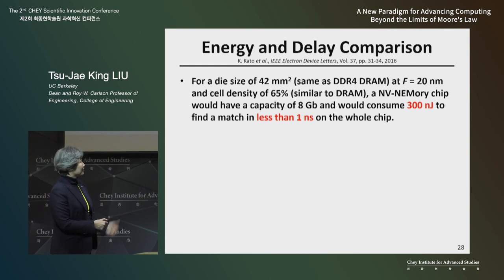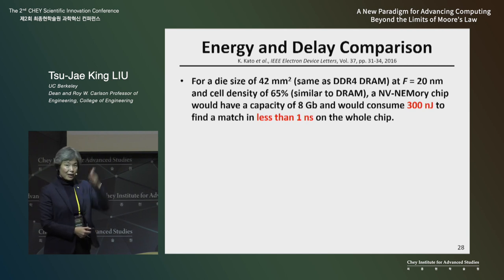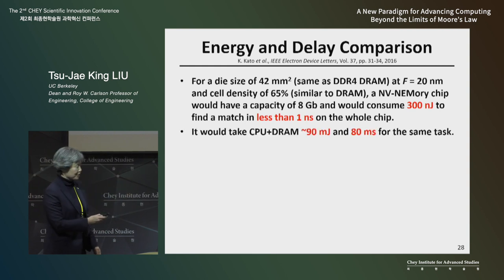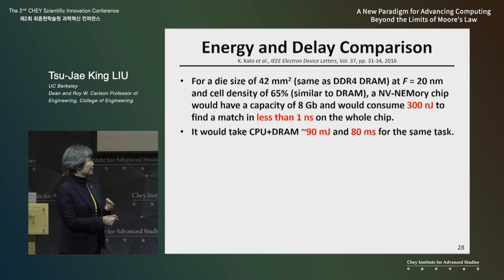We did a theoretical study: if we have a chip that stores eight gigabytes of memory, it would take only 300 nanojoules and less than one nanosecond to find where the string is stored on your chip. By comparison, today with conventional computer processors and a DRAM chip, it would take 90 millijoules — about a thousand times more energy — and 80 milliseconds. That's many orders of magnitude more time and energy to perform the same function.